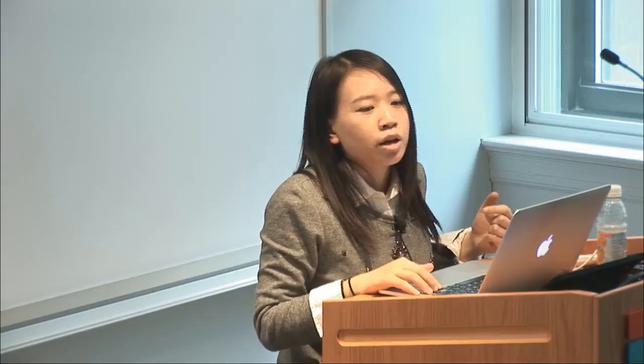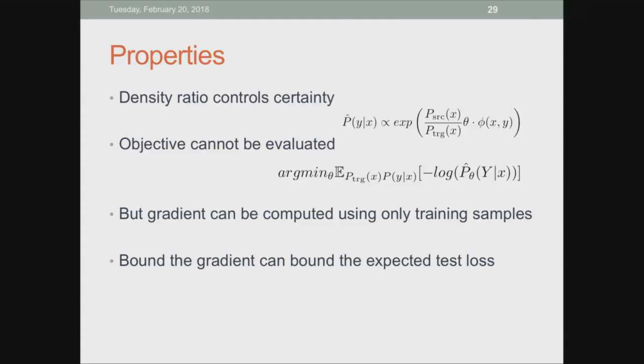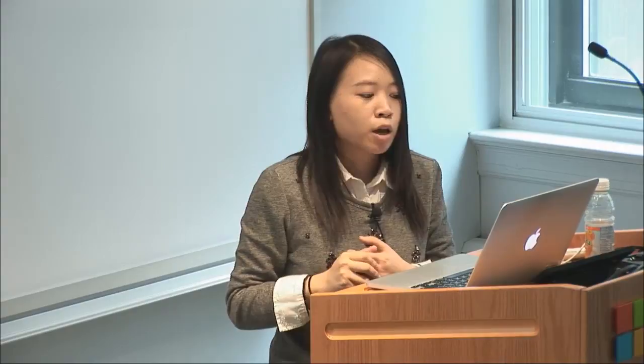Properties of this predictor: the density ratio controls the certainties. And even though the objective cannot be evaluated over the target distribution where we have no labels, the gradient is only in terms of training or source samples, so we can still use gradient descent to optimize the parameters. By bounding the gradient, we can get a bound on the expected test loss. Let's try this out in active learning.